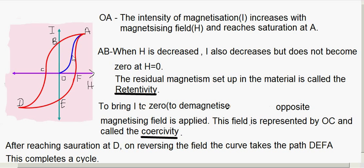To recap: OA represents initial magnetization — when H is increased, I also increases. At point A, the specimen reaches saturation, so further increase in H produces no increase in I. On reducing H, I also reduces, but when H reaches 0, I does not reach 0 — there is still residual magnetism left in the material, which is called retentivity. To reduce this magnetism to 0, we apply H in the reverse direction. The reverse field OC brings I to 0, and one complete cycle of magnetization and demagnetization forms the hysteresis loop.